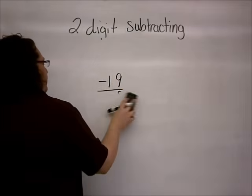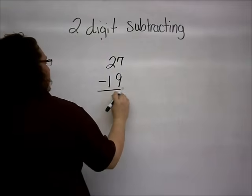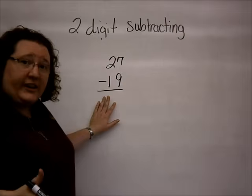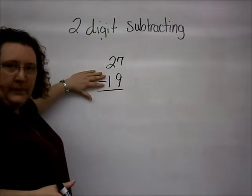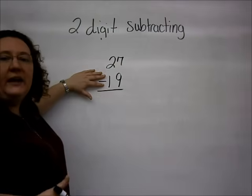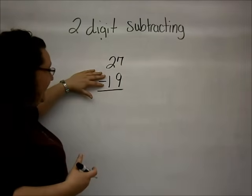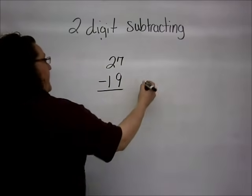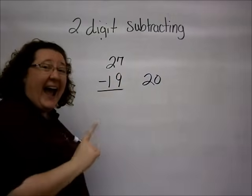We are going to take the same problem, 27 minus 19. Now, what we do is a little bit of addition to actually change the problem. We take a look at the bottom number. We want the bottom number to end up being a number that ends in 0. Since 19 is really close to 20, we are going to use 20. In order to get to 20, what I did was I added 1.